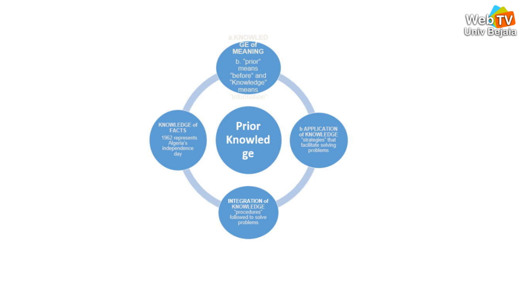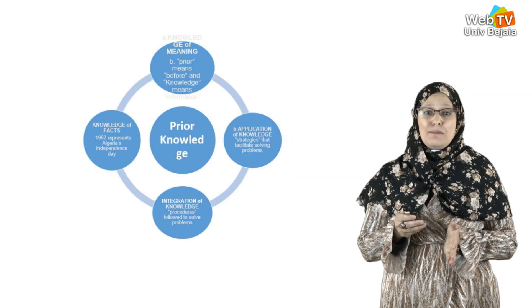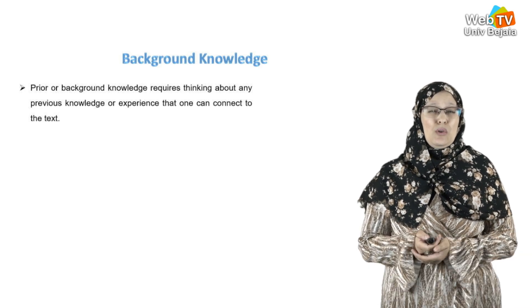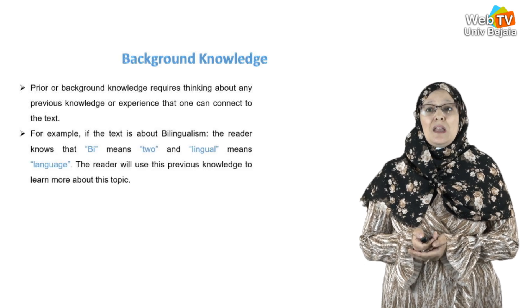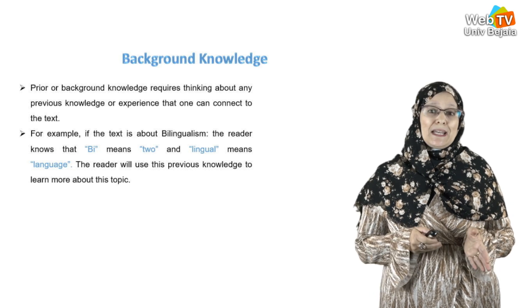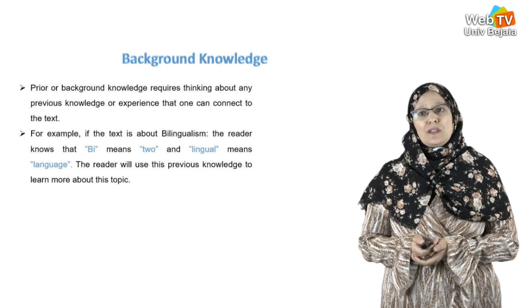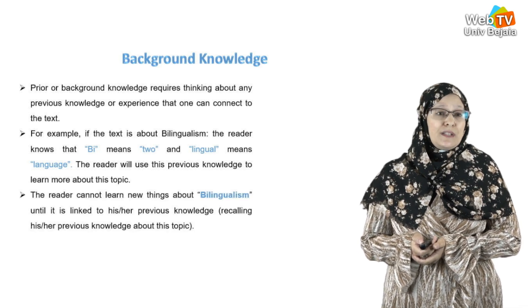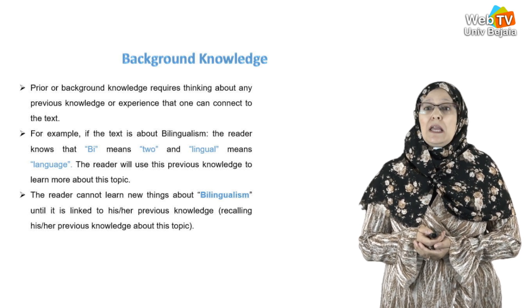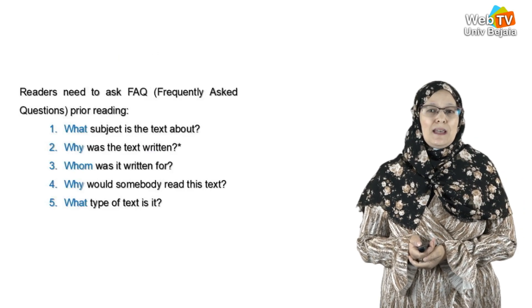To say a word about the meaning of prior knowledge: 'prior' means before, and 'knowledge' means information, so prior knowledge means before the information. Prior or background knowledge requires thinking about any previous knowledge or experience that one can connect to the text. For example, if the text is about bilingualism, the reader knows that 'bi' means two and 'lingualism' means language. The reader will use this previous knowledge to learn more about the topic, linking new things to his or her prior knowledge about this specific subject.